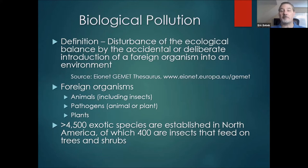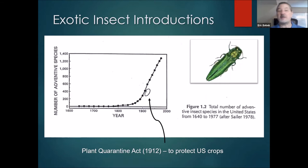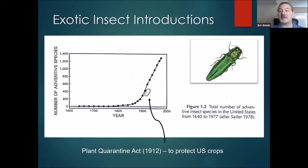Here's a graphic tracking introductions by year, going back to the 1600s and 1700s — barely a blip in terms of the number of introductions into North America. But around 1800 or so, that number starts to increase, and it increases precipitously in the late 1800s and early 1900s. These are the number of adventive species or exotic insect introductions that have become established. Due to this large number, Congress in 1912 established the Plant Quarantine Act, recognizing this as a significant problem and enabling this act to try to protect U.S. crops.